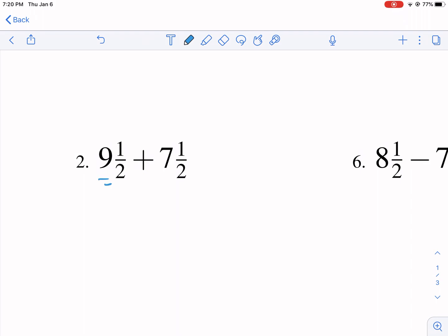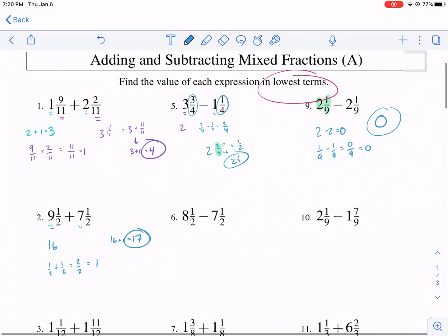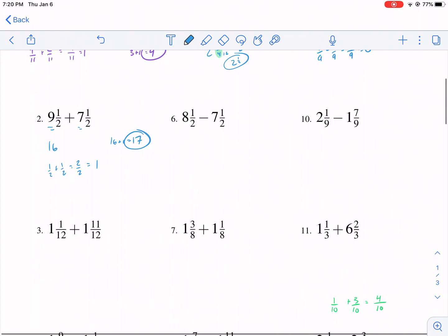Let's do this one real fast. We have nine plus seven, that gives us 16. And then we also have one half plus one half, that gives us one, because that's two halves. So then we have 16 plus one, 17. So that's the process of this. And you can see you can get pretty quick at it.